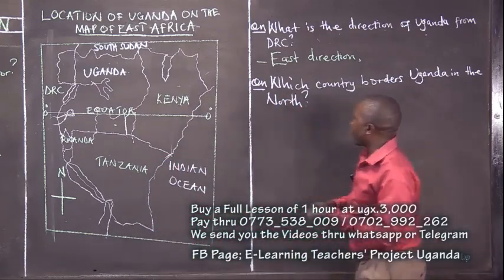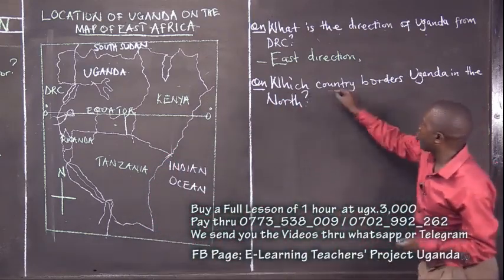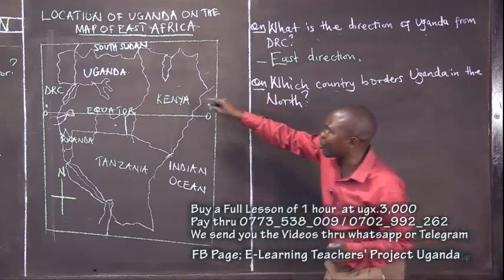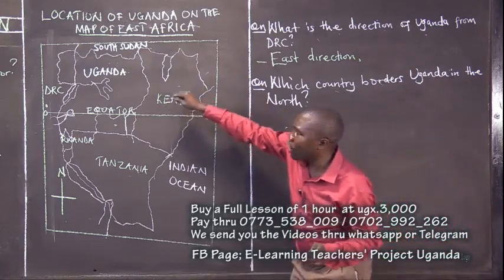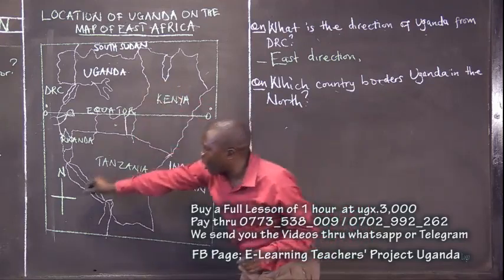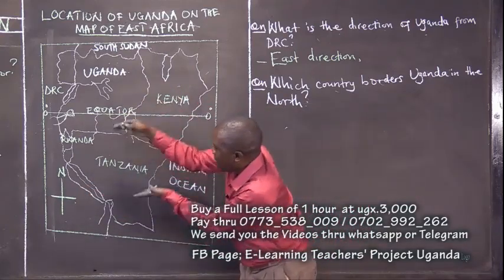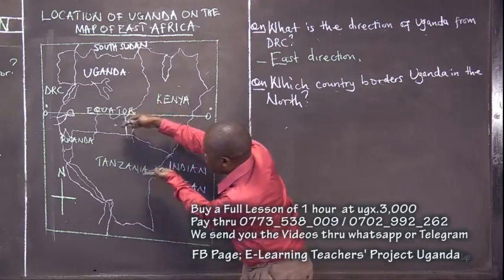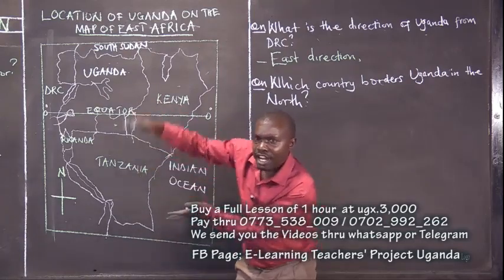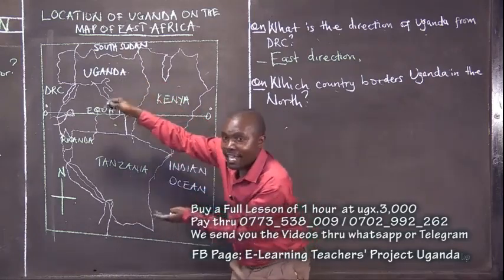You have seen the question: which country borders Uganda in the north? Now let us look at Uganda. Uganda is in the southern hemisphere. Going north from Uganda, which country is in the north of Uganda?